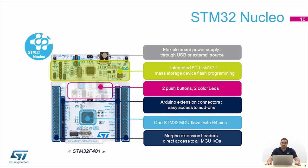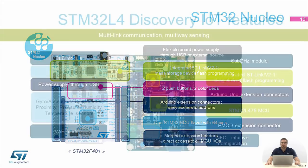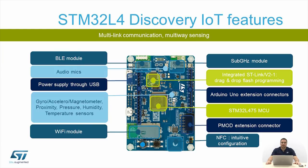We also have the Morph connector that exports all 64 pins of the main MCU. The second board used during the practice session is the Discovery IoT node. This board has the main microcontroller STM32 L475. Onboard we have an ST-Link and many sensors: a 3D accelerometer, gyroscope, magnetometer, pressure sensor, humidity and temperature sensors, and a proximity sensor. We also have connectivity modules including Bluetooth Low Energy, a sub-GHz module, a Wi-Fi module, an NFC tag, and an audio microphone. An Arduino connector and a PMOD extension connector are also available.